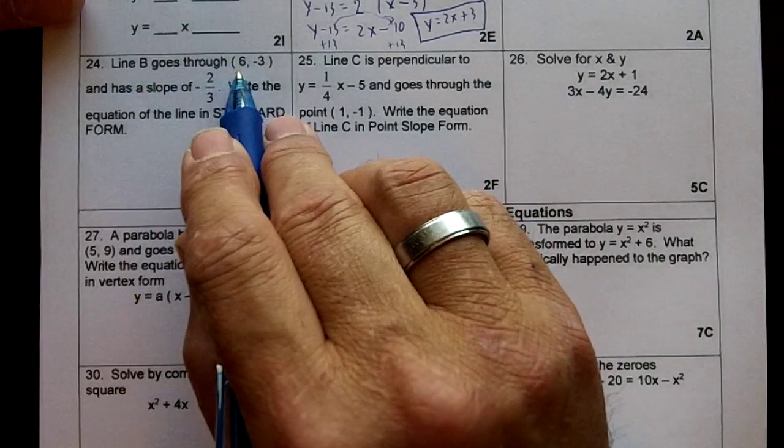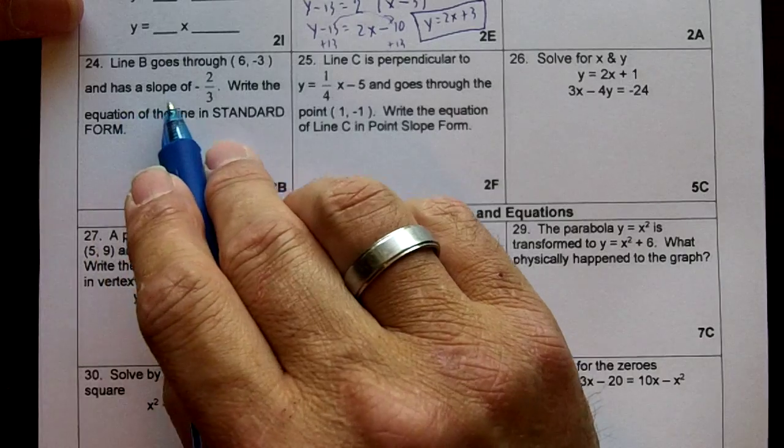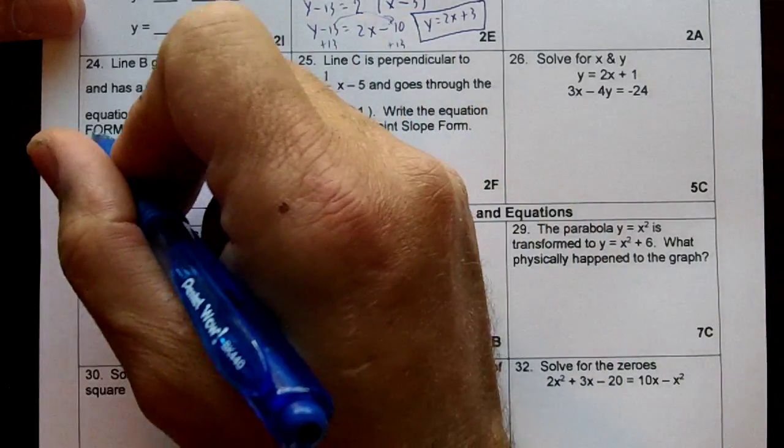Number 24, line B goes through (6, -3) and has a slope of -2/3. Write the equation in standard form.